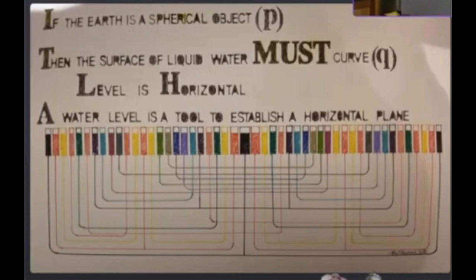Bev, from the channel Try Thinking, is proposing an experiment to show whether there is a curve or not. In one of his latest hangouts, Mr. Sensible had a discussion with Bev, in which Mr. Sensible tried, in vain, for over two hours to explain to Bev how horizontal and level work in a spherical earth model.